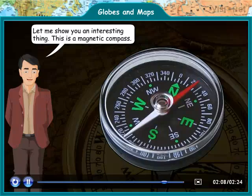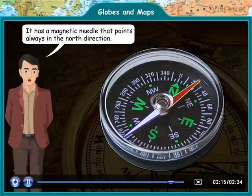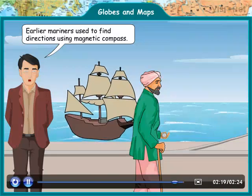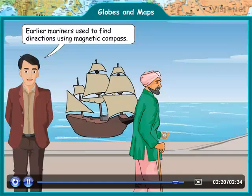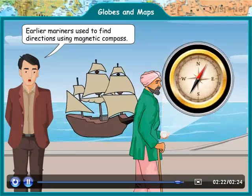Let me show you an interesting thing. This is a magnetic compass. It has a magnetic needle that points always in the north direction. Earlier, mariners used to find directions using a magnetic compass.